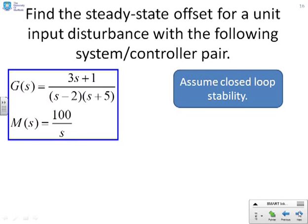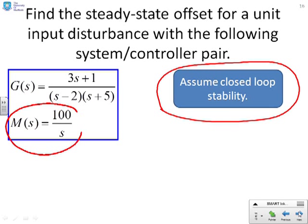And another example. And you'll see, we've emphasized here, you can assume closed loop stability. And therefore, again, as soon as I see that there's an integrator in the compensator, I can say Y of D equals 0. No steady-state offset due to this input disturbance.